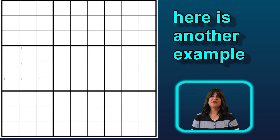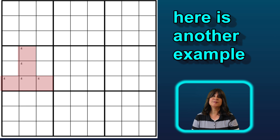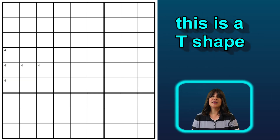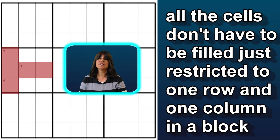Here's another configuration. This is T-shaped, but again the 4s are restricted to one row — in this example, the last row — and one column — here it is the middle column — making it an upside down T-shape. It can also be a sideways T-shape. Again, you can see the 4s are restricted to just one row, the middle row, and one column, and don't appear anywhere else in the block. The T-shape, just like the L-shape, does not have a 4 in every cell, and the T-shape can have some cells containing 4s and some not, but all the 4s are restricted to one row and one column.